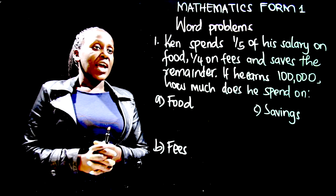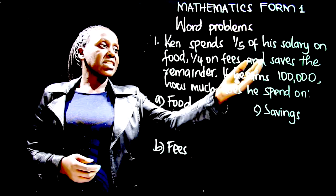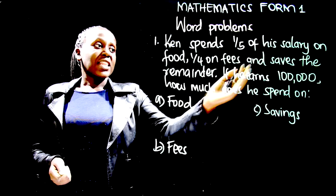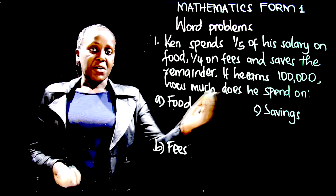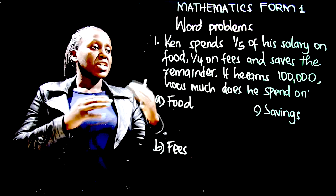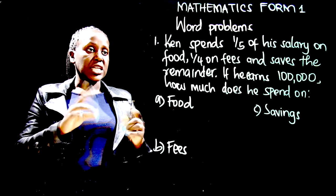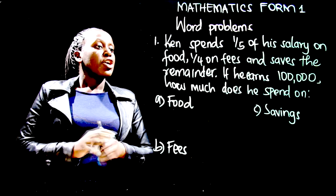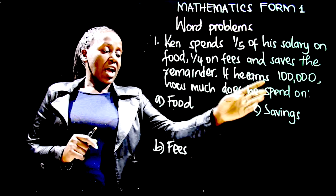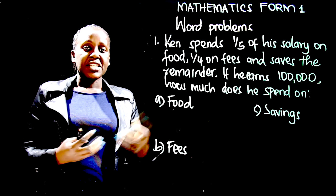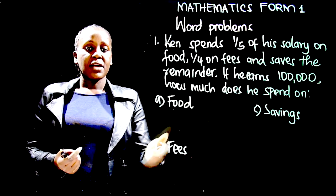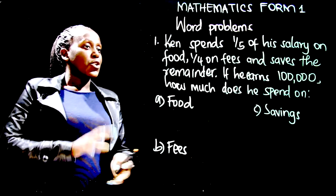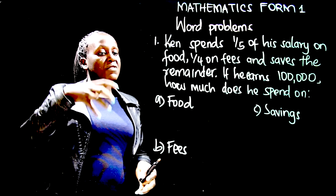In the first question, Ken spends a fifth of his salary on food, a quarter on fees, and saves the remainder. His money goes to three things: food, school fees, and savings. If he earns 100,000 shillings, how much does he spend on food, fees, and savings? The question gives us direction, so before we solve, let us highlight what is important.